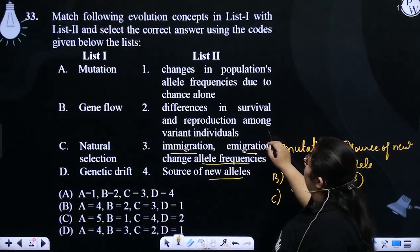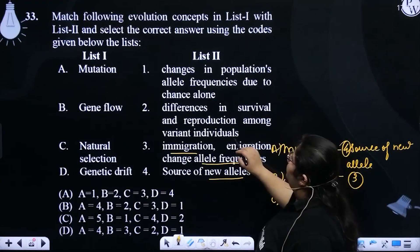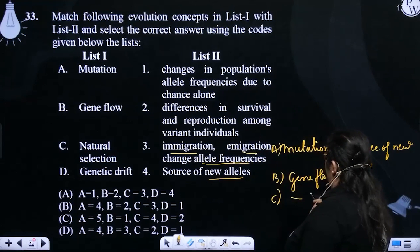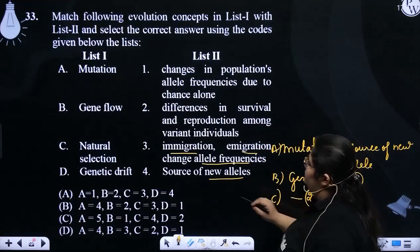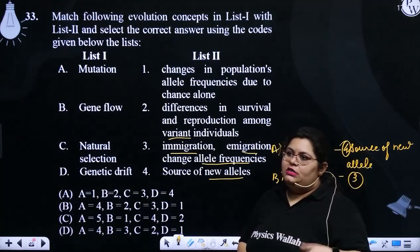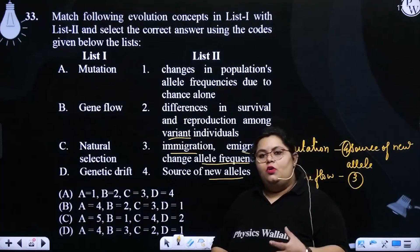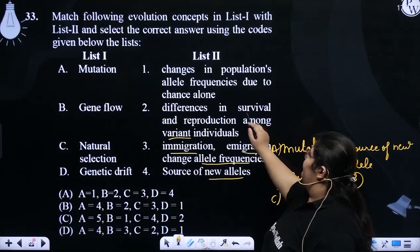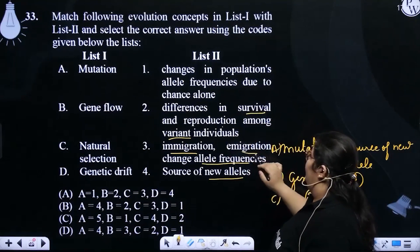...survival and reproduction among variant individuals. This is survival of the fittest—the one who survived has the variation. Natural selection is a difference in survival and reproduction among variant individuals, so C matches with two.